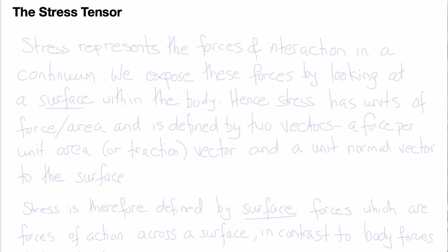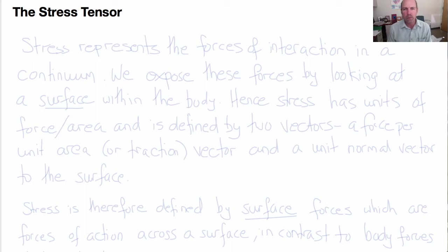Welcome back. Today we're going to talk about the stress tensor, which is arguably the most important physical quantity in continuum mechanics, and one that can be difficult to understand at first. The stress is a tensor — tensors are physical quantities whose components can be represented in a 3x3 matrix. We'll see what the stress tensor looks like and start to understand some of its properties.